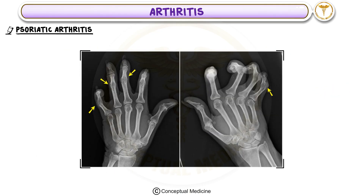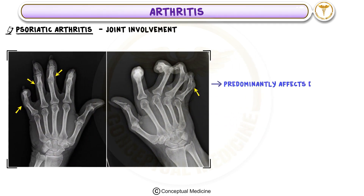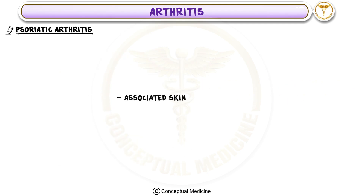Psoriatic Arthritis — Joint Involvement: Psoriatic arthritis predominantly affects the distal interphalangeal joints, in contrast to rheumatoid arthritis which spares the distal interphalangeal joints. One of the defining characteristics of psoriatic arthritis is its association with skin and nail changes seen in psoriasis.